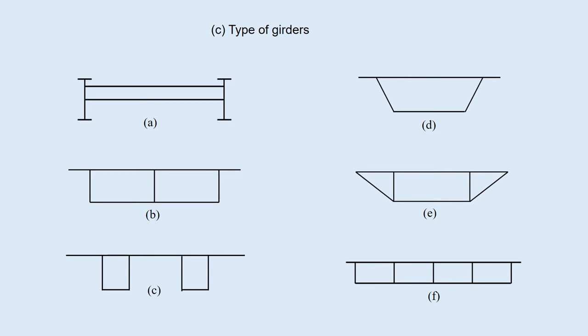For long-span cable-stayed bridge, strong winds would cause harmful vibration problems, and therefore the improved girder sections of D, E, F must be used.